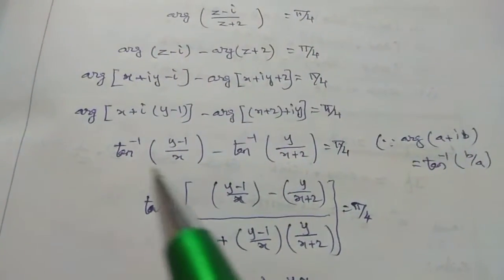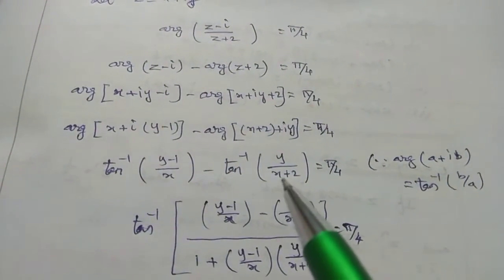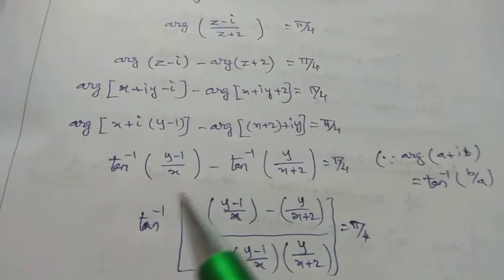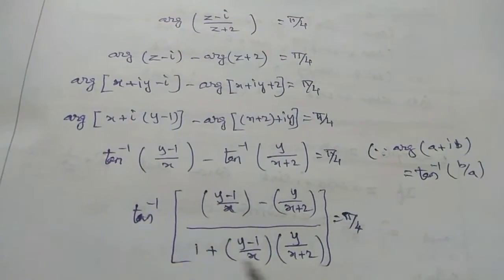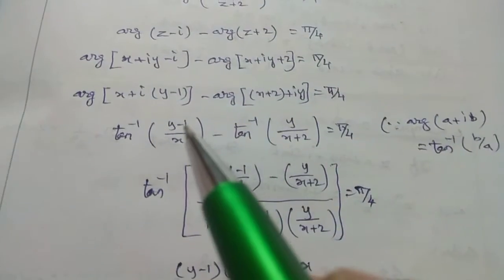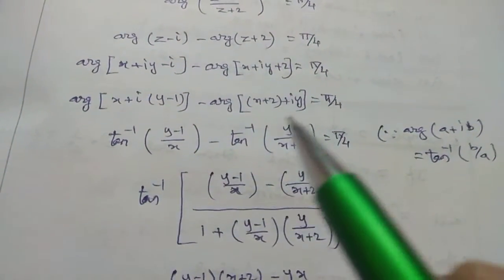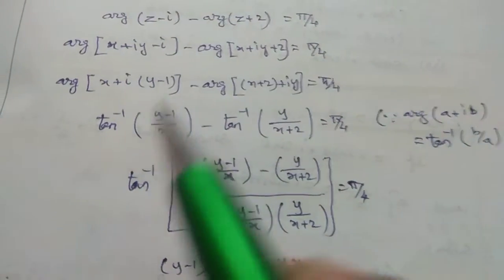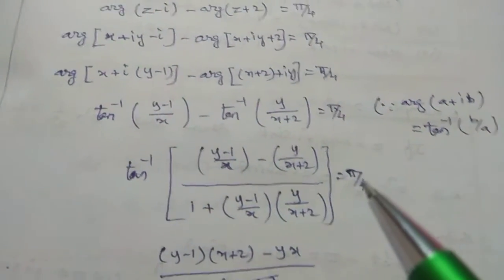Using the formula: tan inverse of a minus tan inverse of b equals tan inverse of (a minus b) divided by (1 plus ab). Here a is (y minus 1)/x and b is y/(x plus 2), divided by 1 plus a value into b value equals π/4.